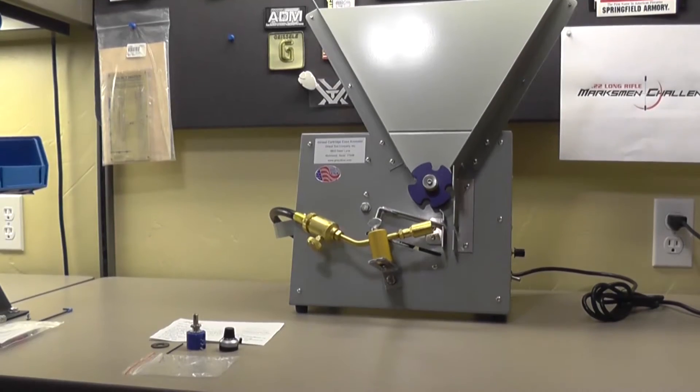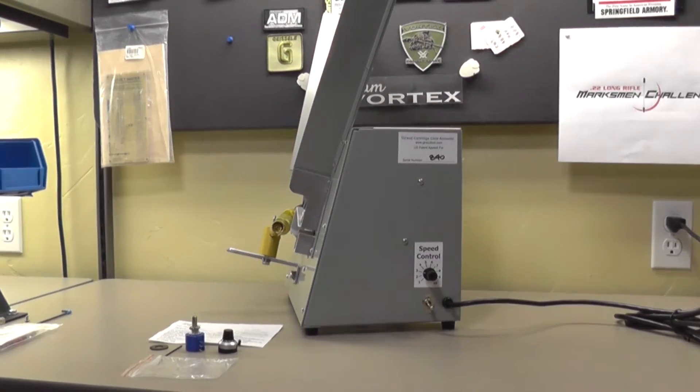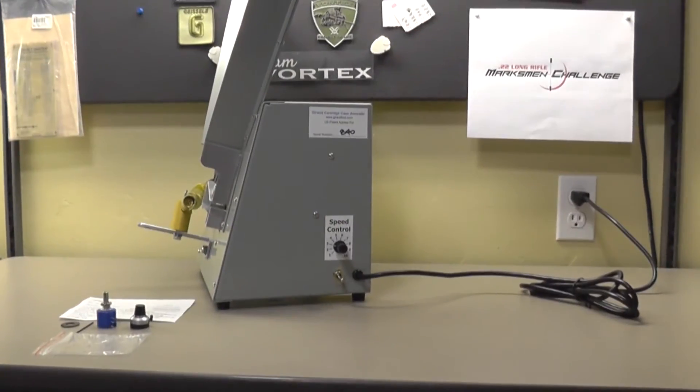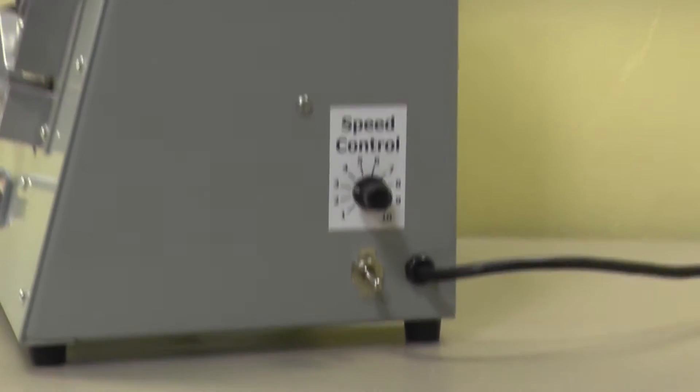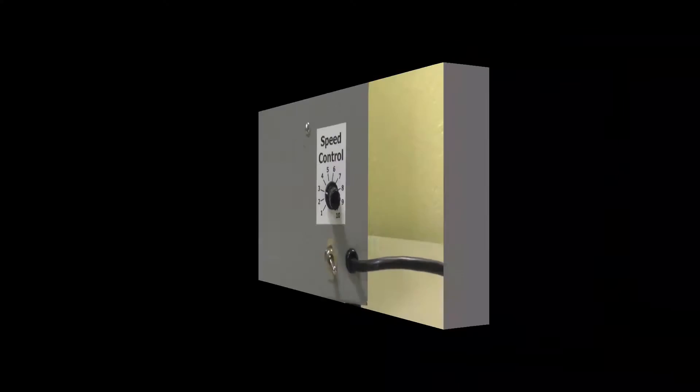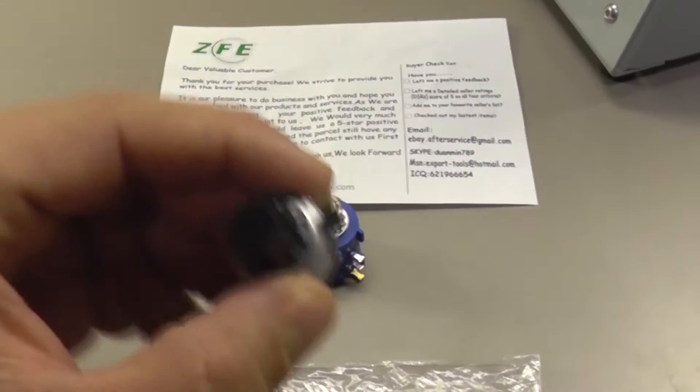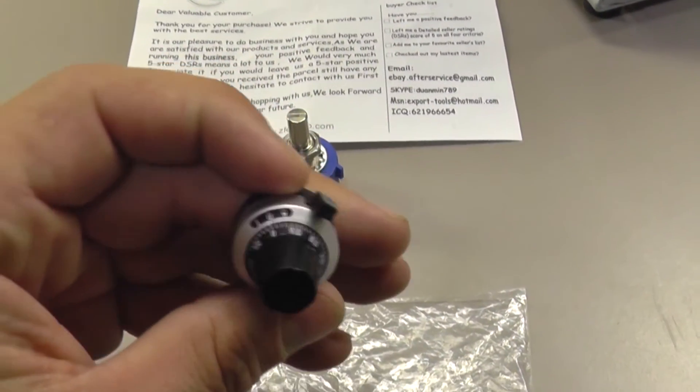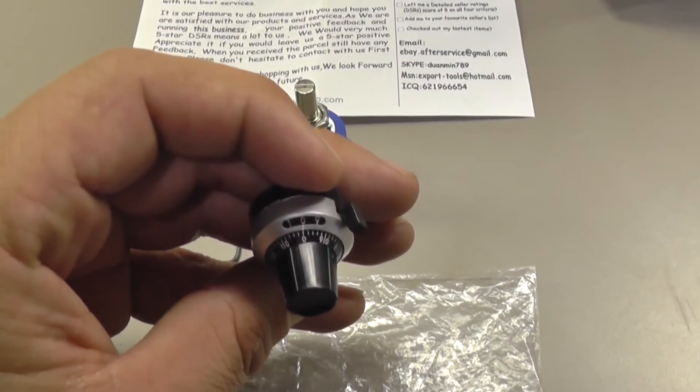Now this is the existing potentiometer where you set your speed control for how fast the cases turn while you're annealing. This is the new potentiometer I'm going to put in. It has much better readings on the adjustments.